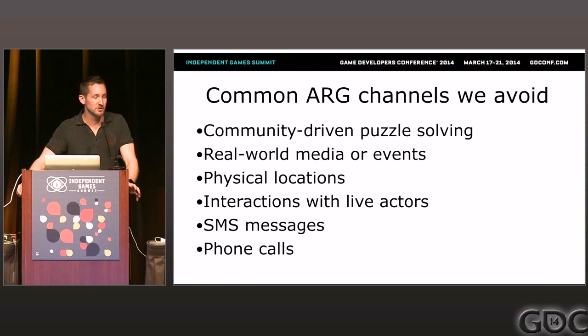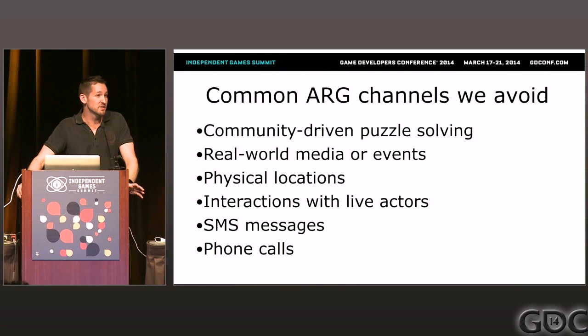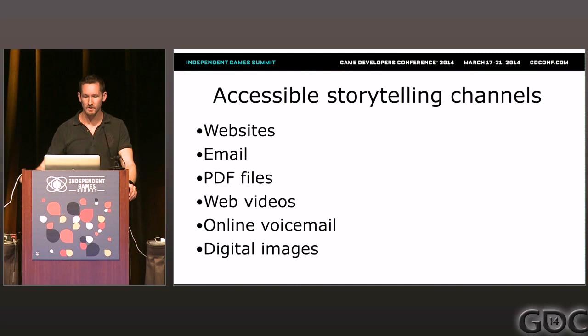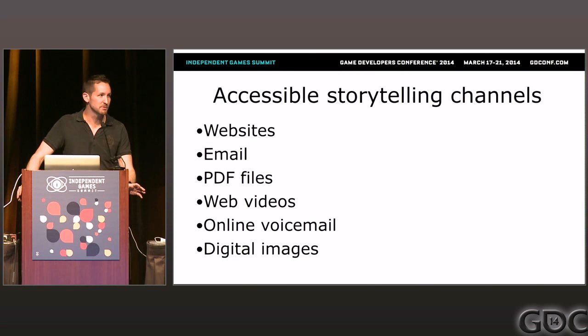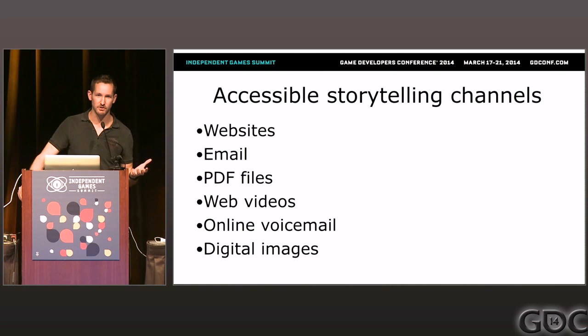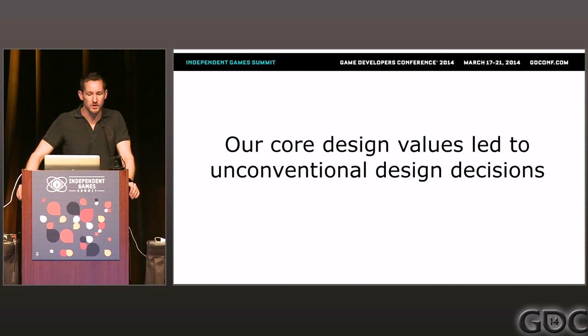SMS messages and phone calls are really cool channels for storytelling, but they assume you have a North American phone plan. Very surprisingly, even though we launched just four weeks ago, 25% of our players are from countries that don't have English as their primary language — and we haven't localized into any other languages. So accessibility really matters. The channels we are using — websites, email, PDF files — can all be accessed over the web, through basically any browser including tablets and phones. Everyone understands them, and weaving a story into these channels feels really compelling and very real.